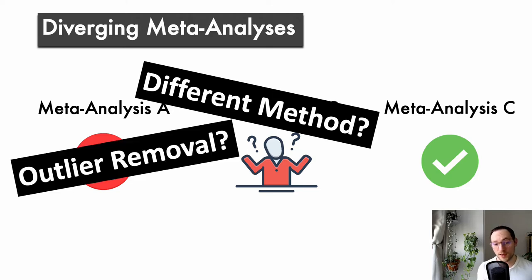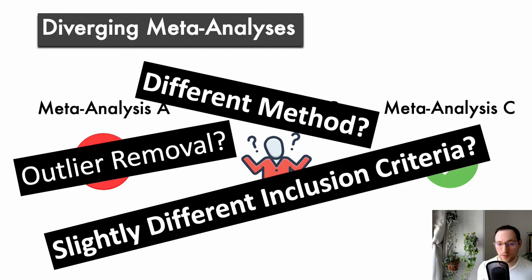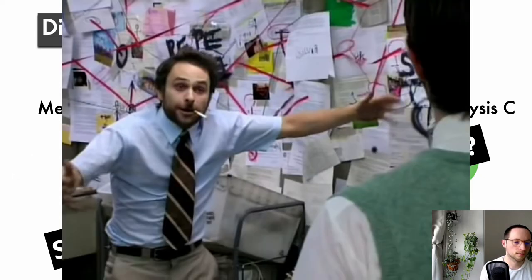Or they might have used different criteria for removing outliers. They did not remove any outliers, or they used a specific cutoff, and so on. Or they might have used different inclusion criteria. And the list can go on and on. But it is really important to understand why those different diverging results emerge. And this can be very tedious and also frustrating.